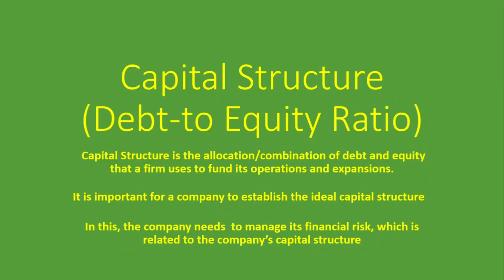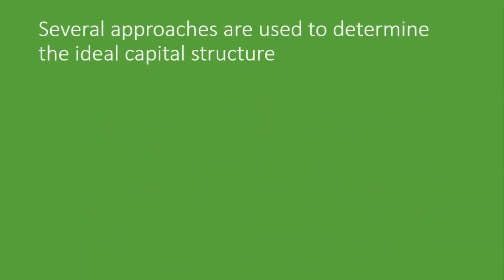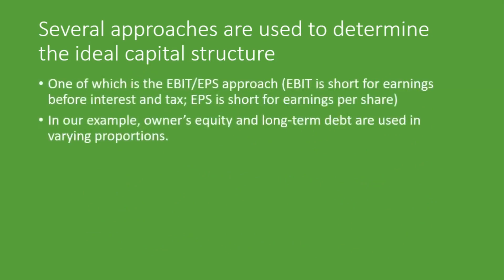So let's take a look at a few examples. There are several approaches that are used to determine the ideal capital structure, one of which is the EBIT-EPS approach. By EBIT, we mean the earnings before interest and tax, and EPS is short for earnings per share. In our example, owners' equity and long-term debt are used in varying proportions.